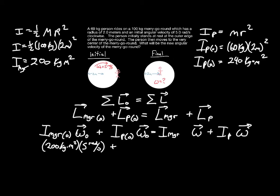On the final side, the person is at the axis of rotation, so r is essentially zero. Although treating them as a point mass at the center isn't perfectly accurate — they could be modeled as a small cylinder — their dimensions are very small compared to the merry-go-round. So we treat I_P-final as zero: 60 kilograms times zero squared equals zero.